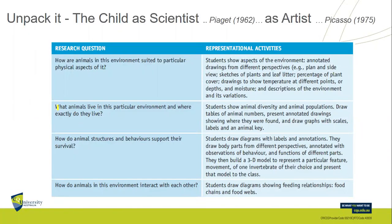The child is a scientist, says PRJ. Picasso says the child is an artist — very much a creative enterprise. How are the animals in this environment suited to particular physical aspects of it? Students can go through a whole range of learning activities — sketching, the percentage of plant cover in a particular environment. Plants can obviously link to species, species link to plants' preferences, we can look at food sources. We're starting to build up bio data about our own food webs, and this is all happening in our own school grounds.